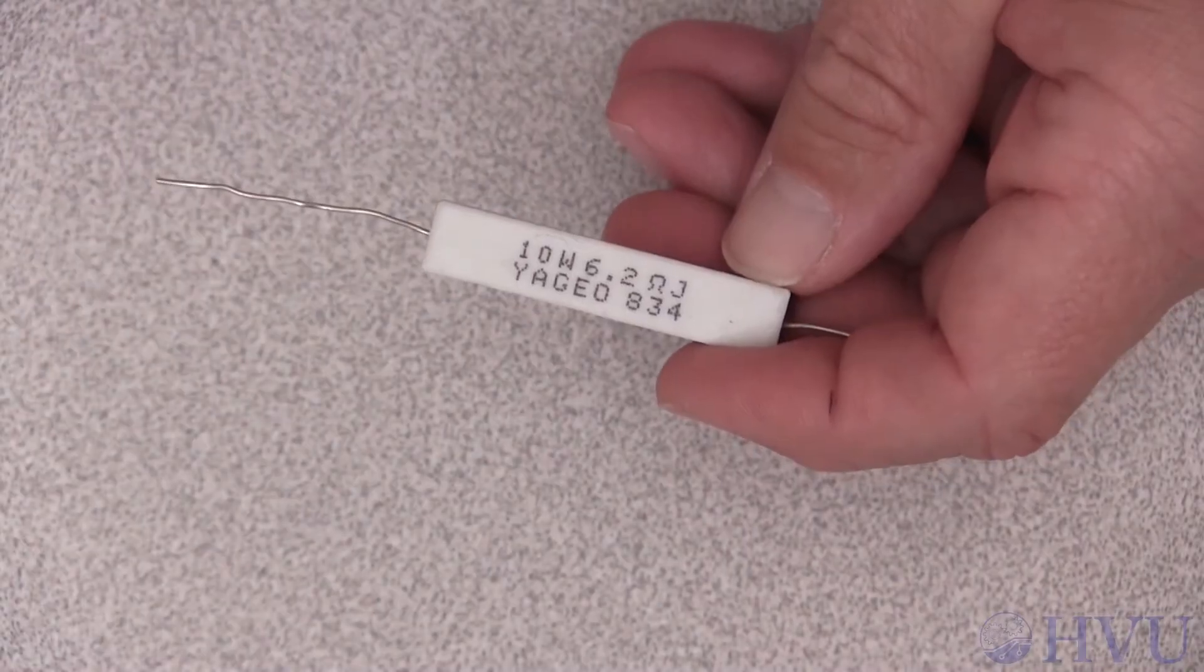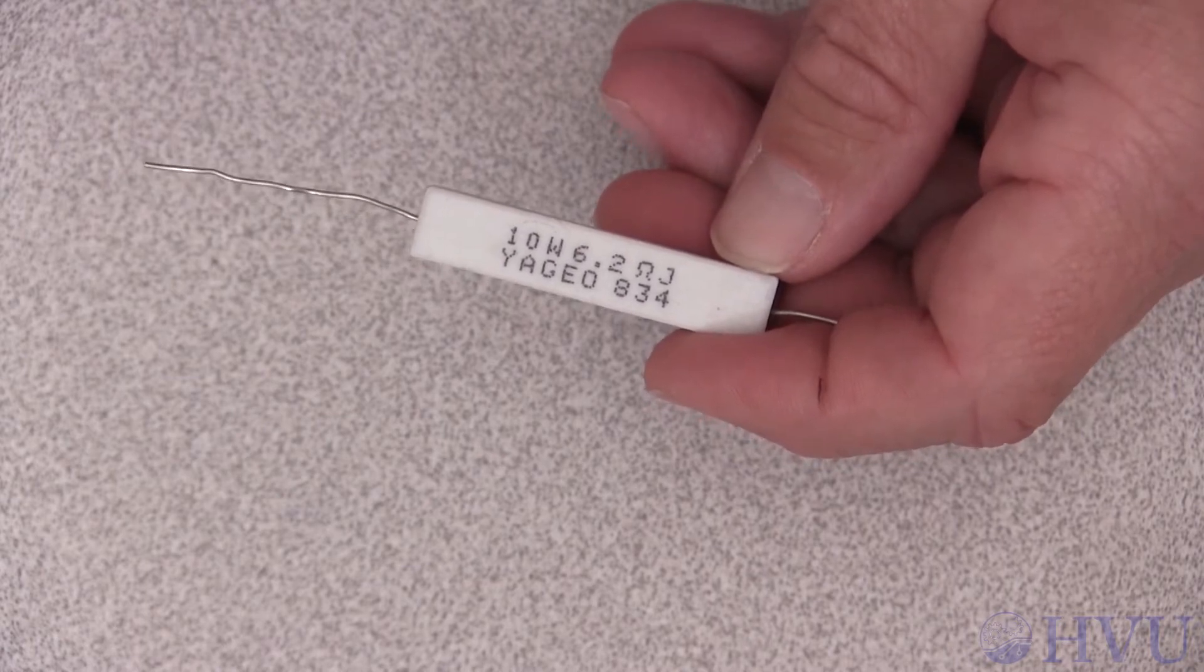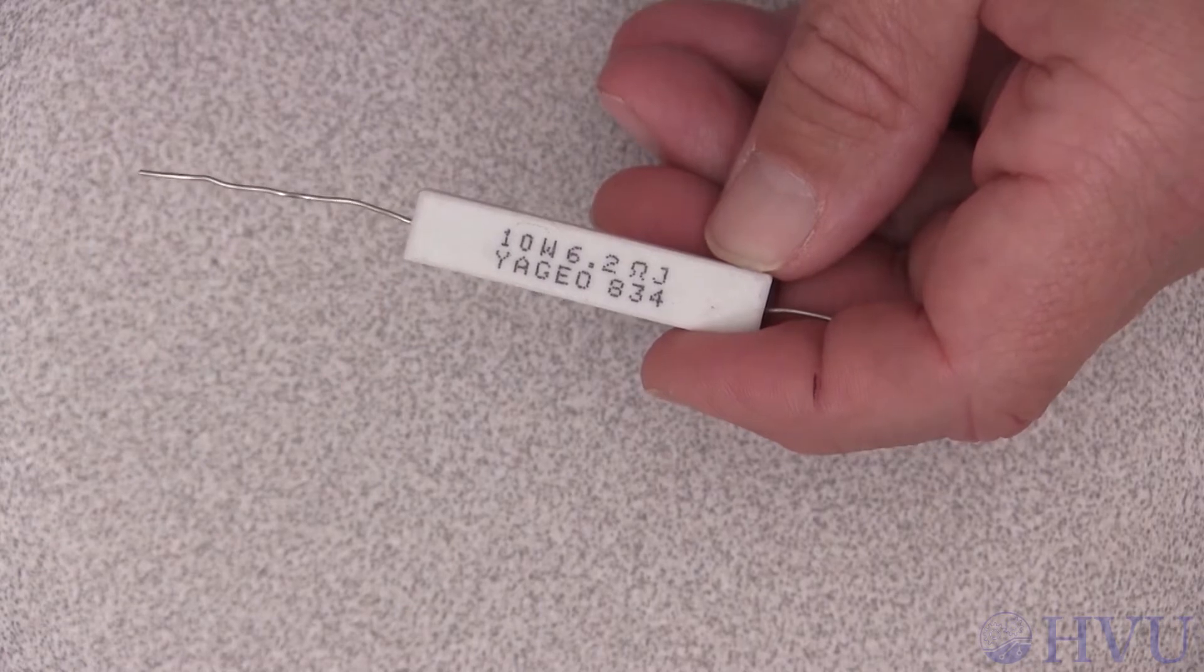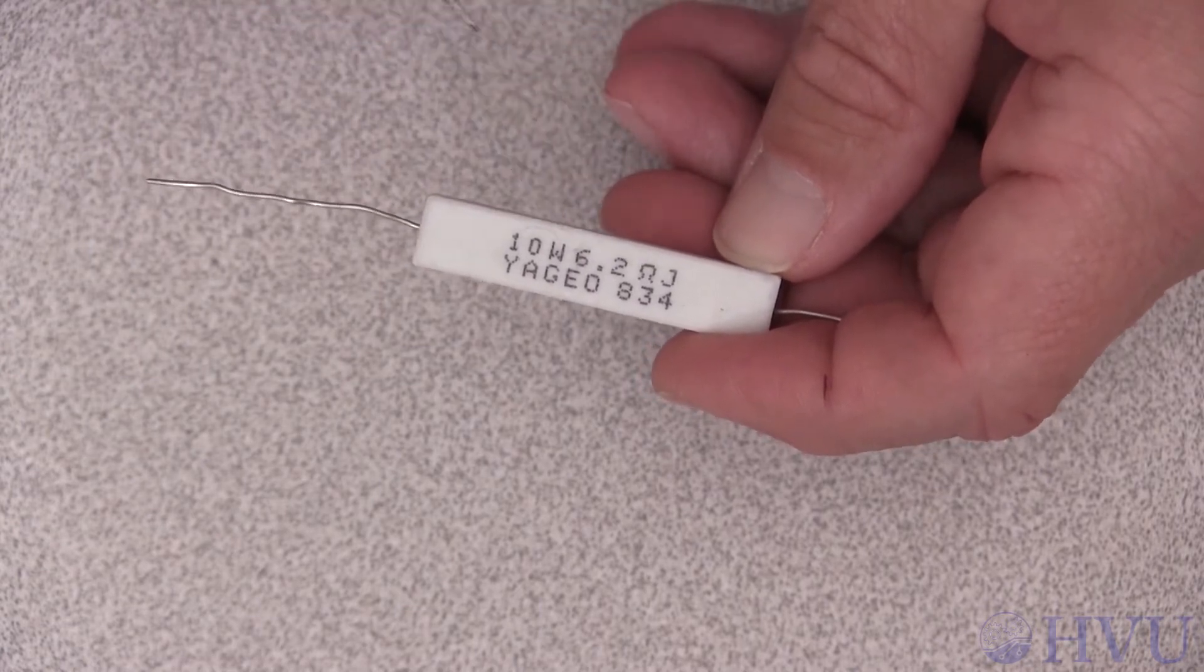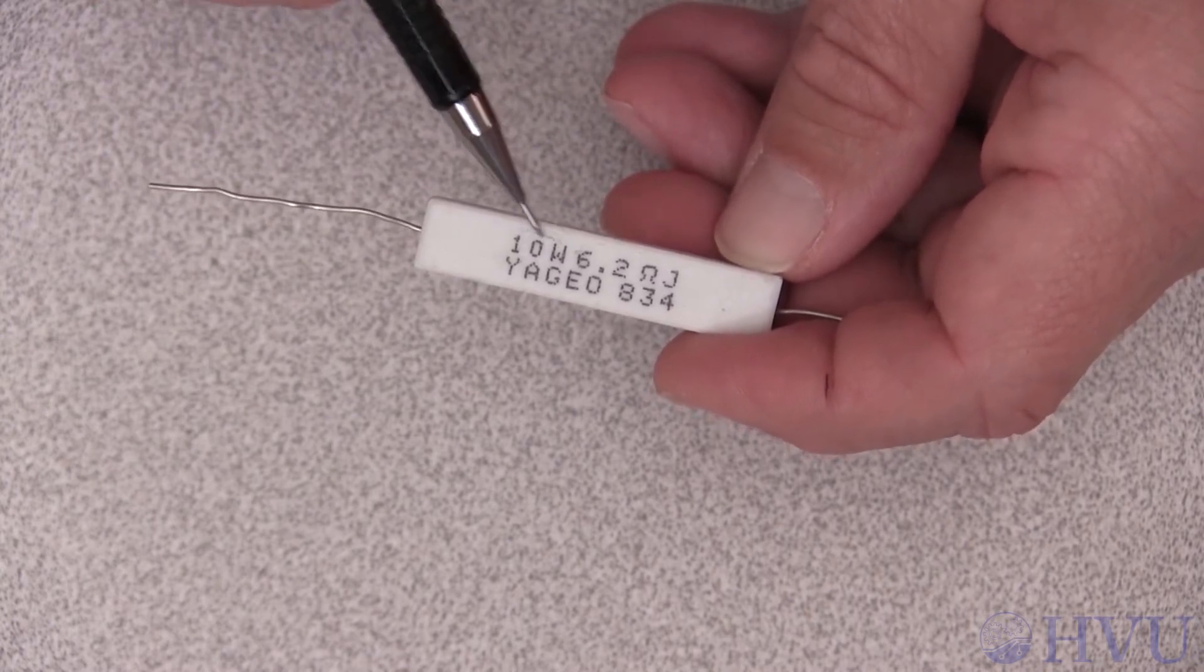This is a large wire-wound power resistor. Resistors like this one, which are physically large enough, will often have the resistance value printed directly on the side. This is a 6.2 ohm resistor. Notice that on this resistor, the maximum power dissipation is also listed, 10 watts.